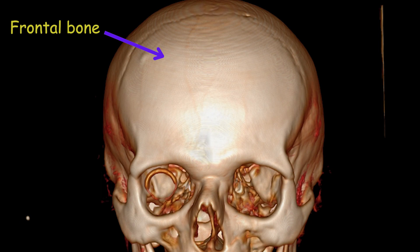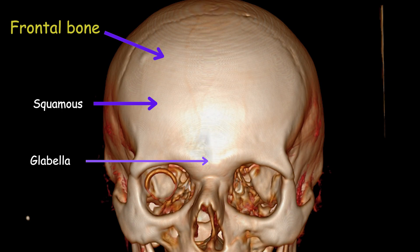The frontal bone consists of several distinct parts. The squamous part is the largest and most anterior portion of the frontal bone; it forms the forehead and the anterior part of the roof of the orbit. The glabella is a smooth, slightly depressed area situated between the eyebrows and above the nose, and plays a role in facial expressions, particularly those related to frowning or expressing concentration.